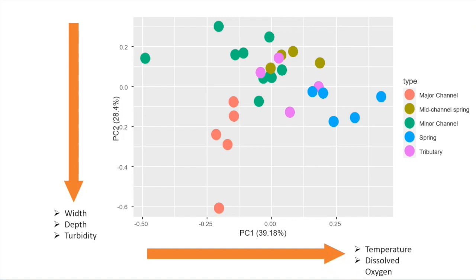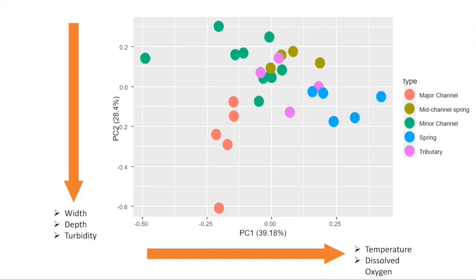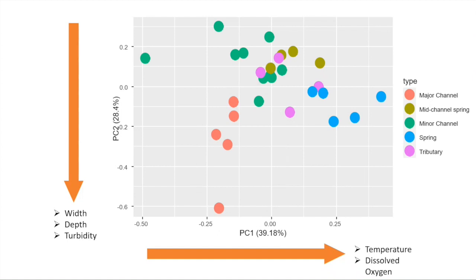This is a plot of channel types on the Cass, collected a couple of weeks ago in June. It shows a whole bunch of physical variables compressed into two axes. On the y-axis you've got decreasing width, depth, and turbidity as you go up. On the x-axis you've got temperature and dissolved oxygen. Minor channels have lots of variation in temperature in June but are quite shallow and clear, whereas major channels have less temperature variation but can be much more turbid. Springs, on the right, are actually warmer in winter and clearer. This is spatial heterogeneity.